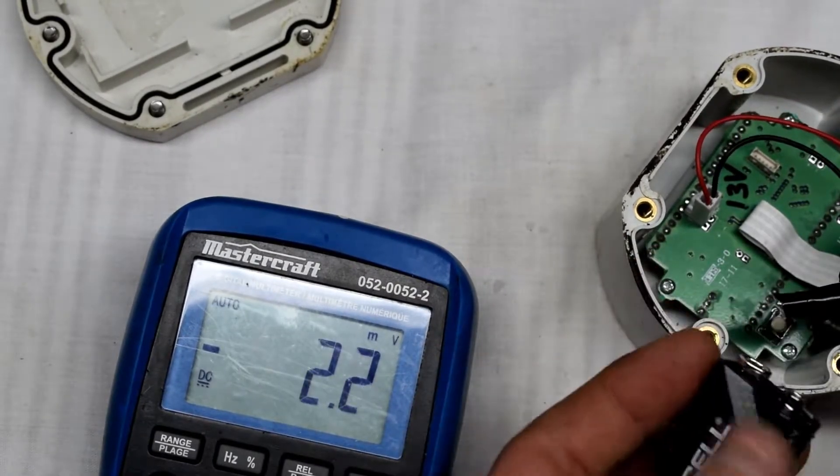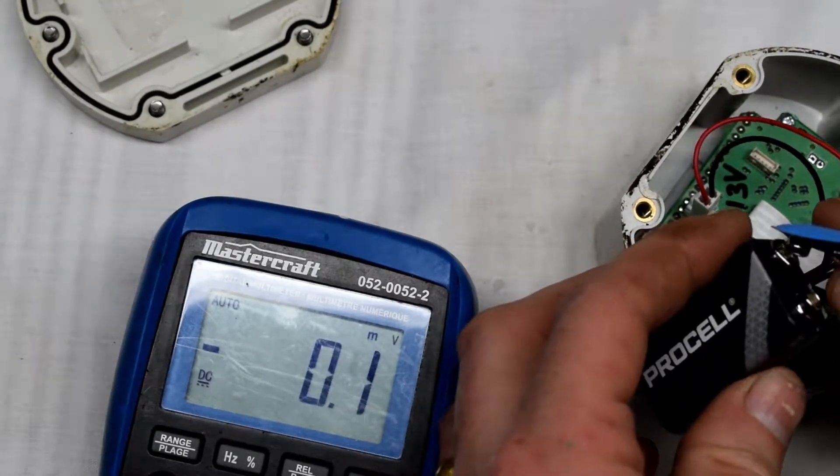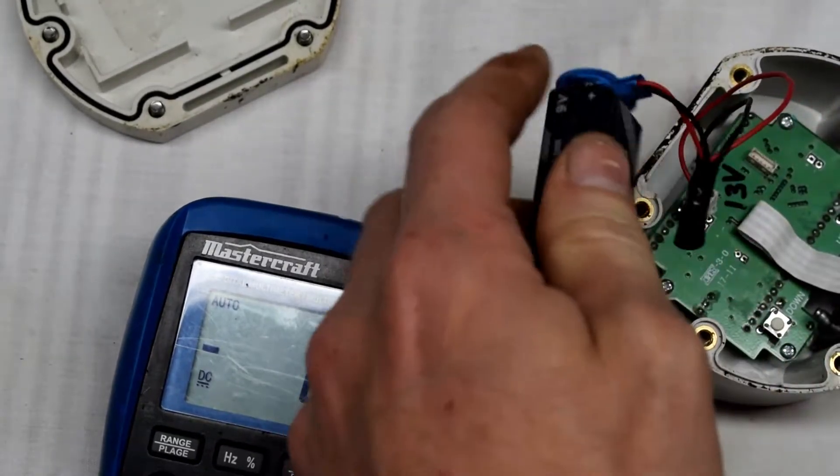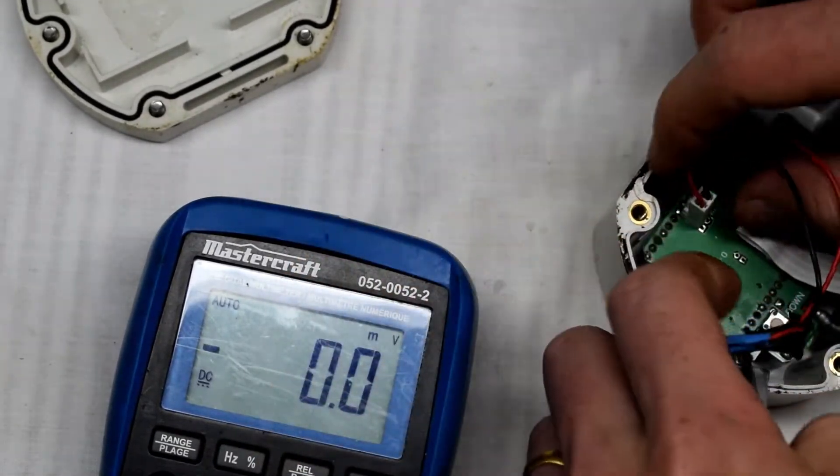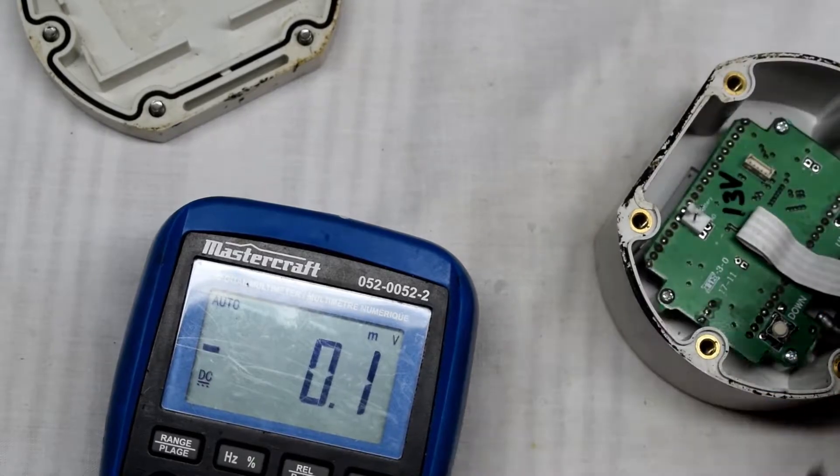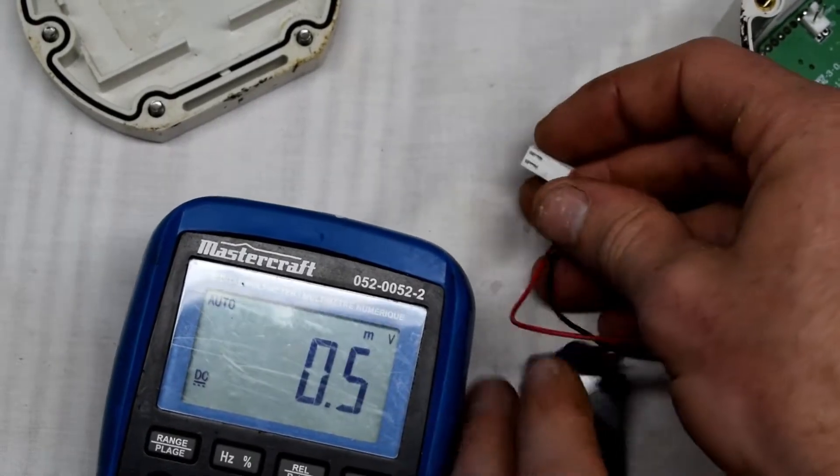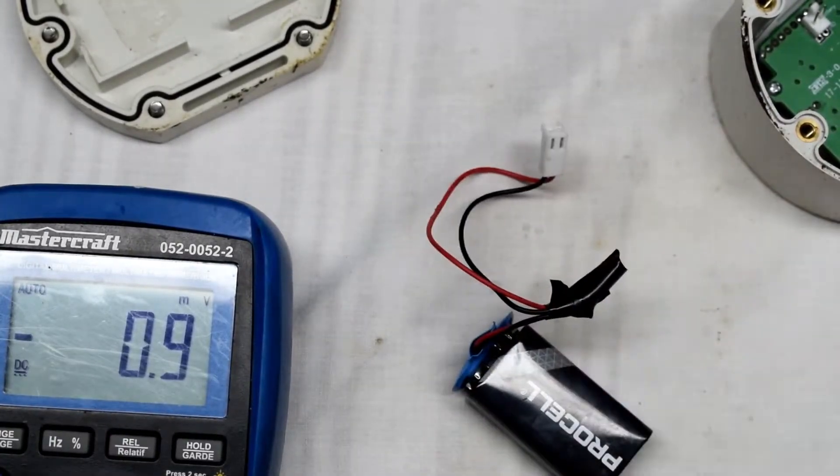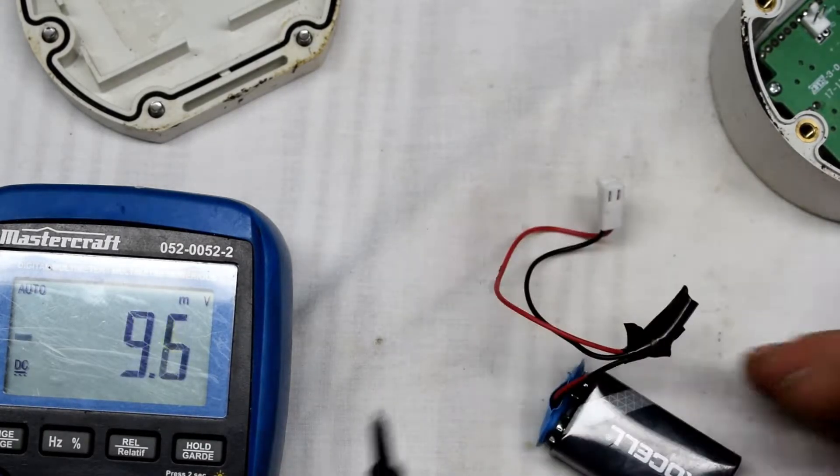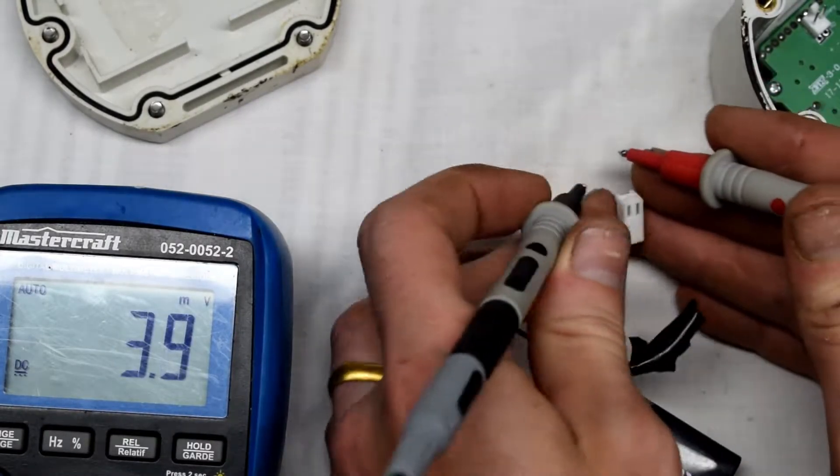I'm reconnecting the connector and testing if the cable is okay. Using my multimeter in DC voltage mode, I'll see if we can measure the 9 volts at the end. I'm getting 9.6 volts.